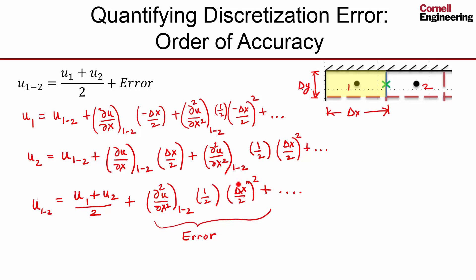And it's proportional to delta x squared. So the error is proportional to delta x squared because that is the leading term. As delta x becomes small, this term in the error will dominate the other terms, and so you would say this is a second order accurate approximation.